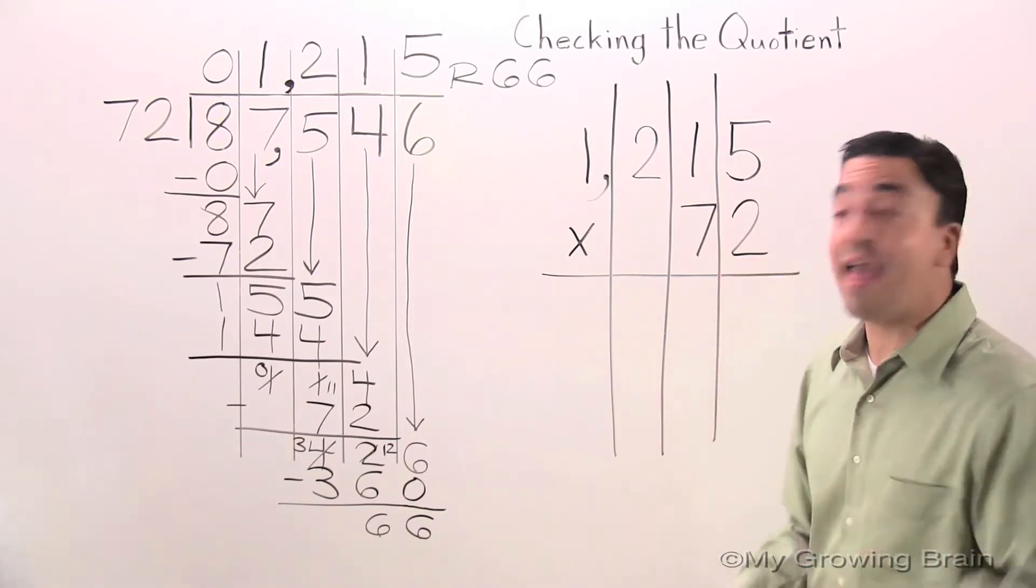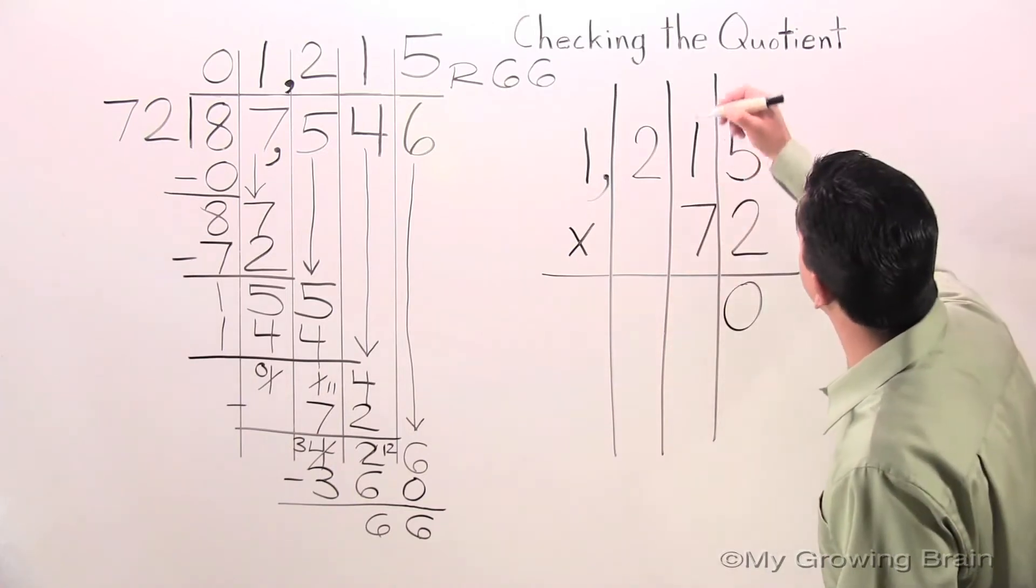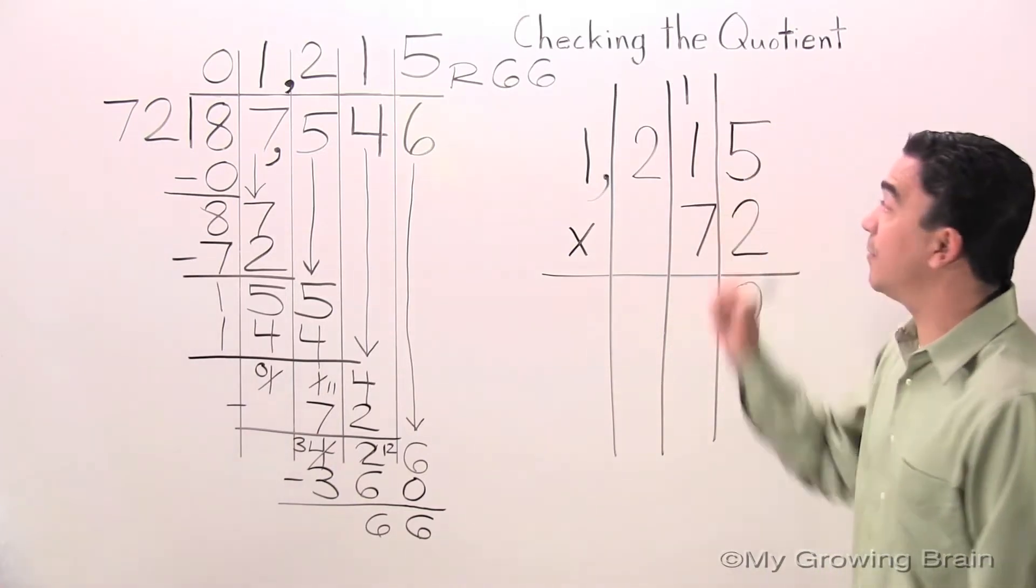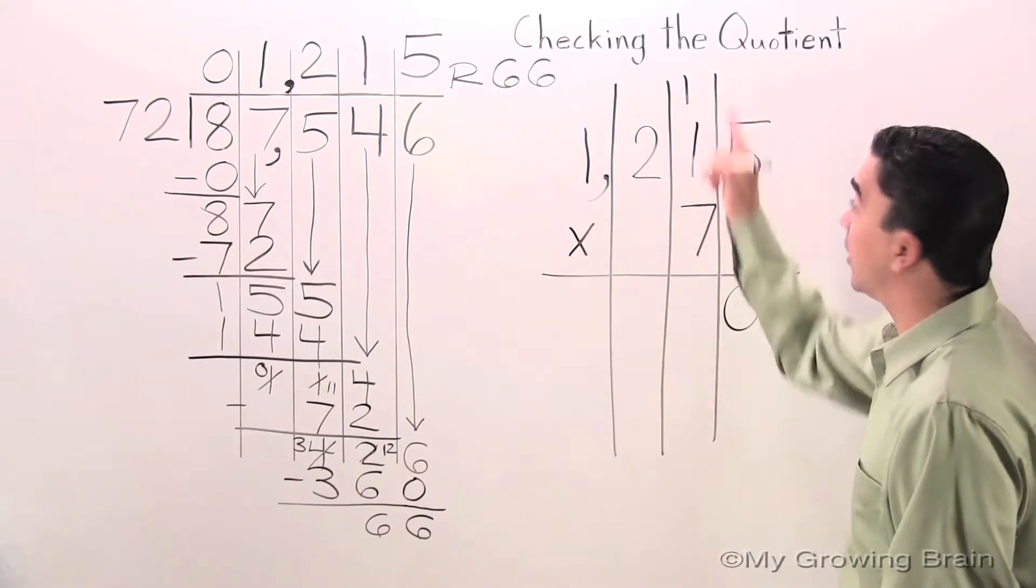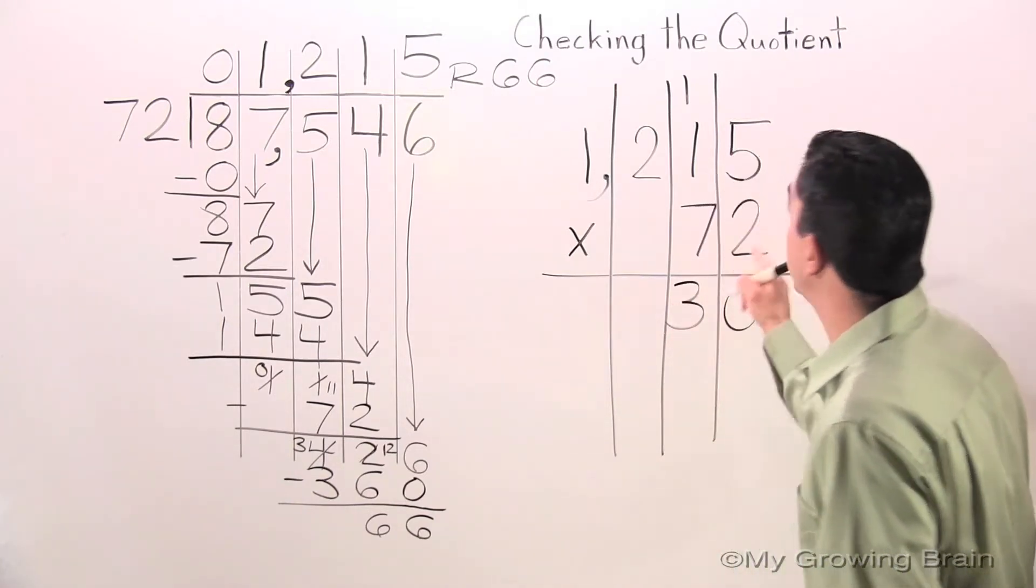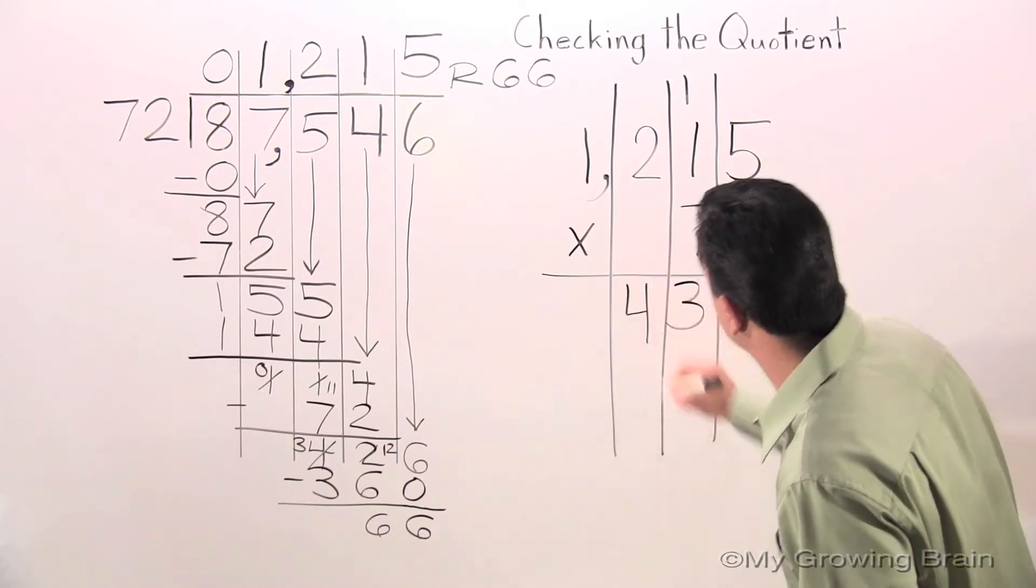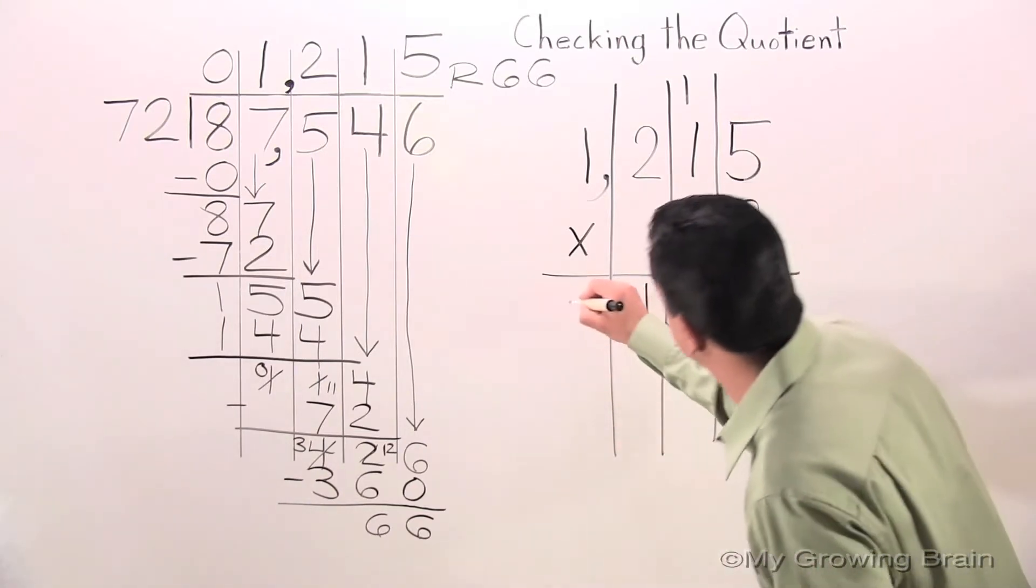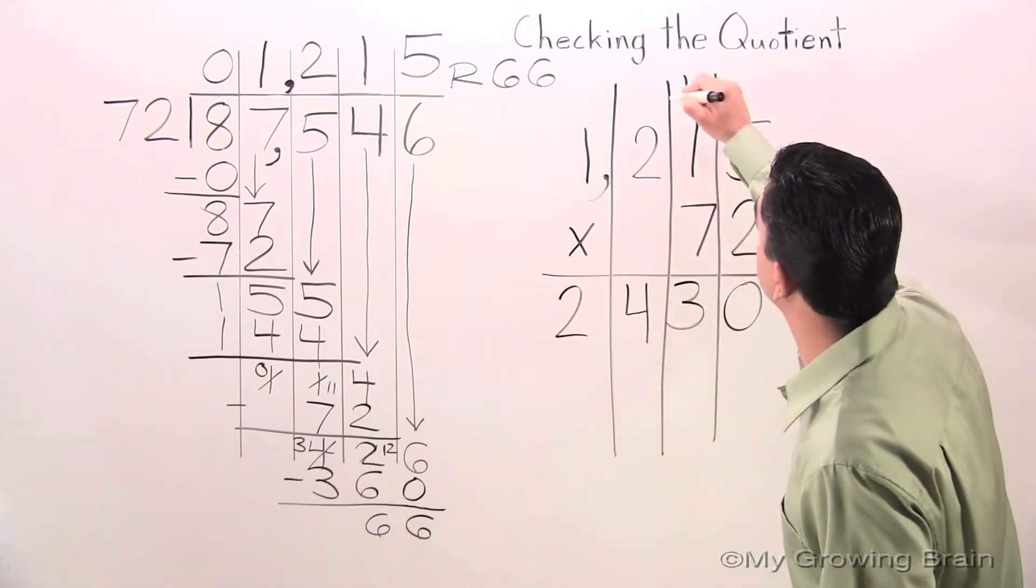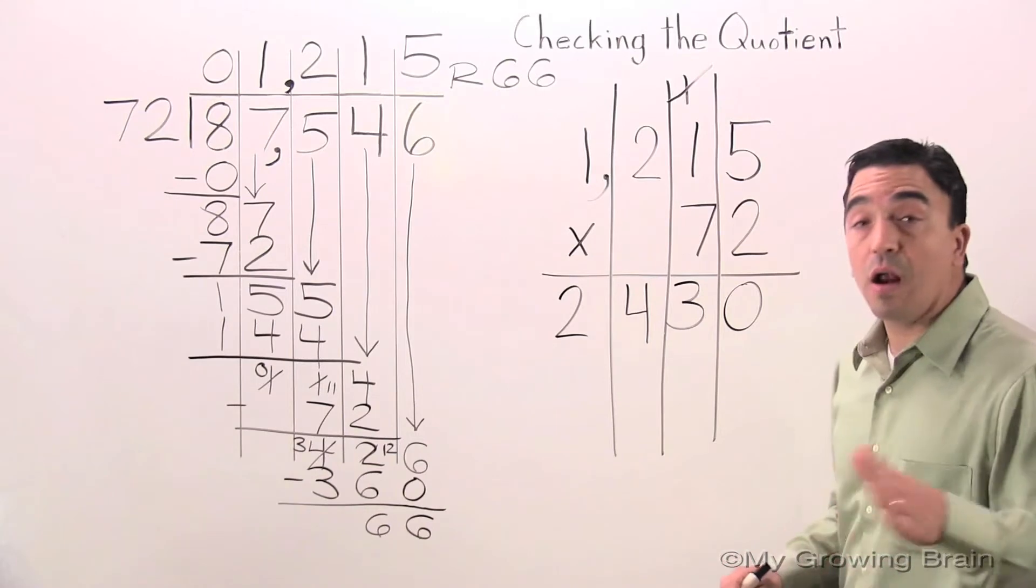2 times 5, 10. Regroup the 1. 2 times 1, 2. Plus 1, 3. 2 times 2, 4. 2 times 1, 2. I'm going to take that away so it doesn't confuse me.